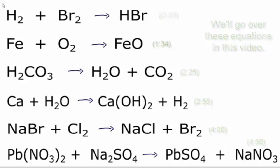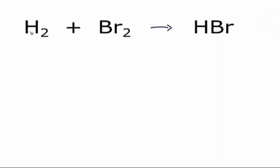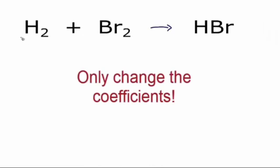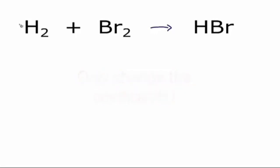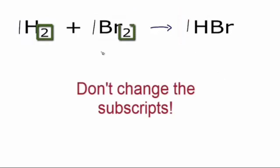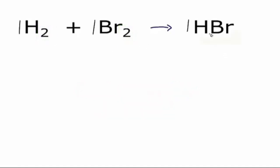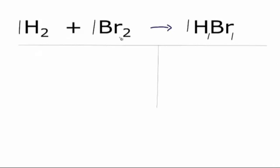Let's get started. When we look at equations, the numbers in front, the coefficients, are the only thing we can change. Right now, even though it's not written, there is a one here, a one here, and one in front of the HBr. The numbers we cannot change are the subscripts, these numbers after. And if there is nothing written, we assume it to be a one. To balance the equation, some people find it helpful to make a table.